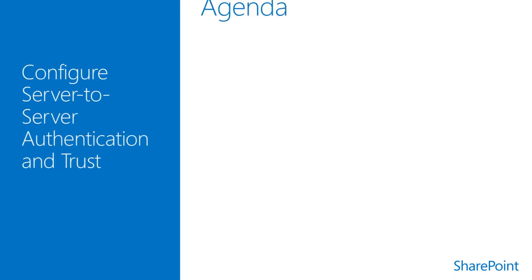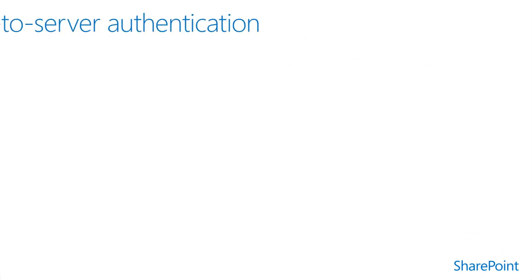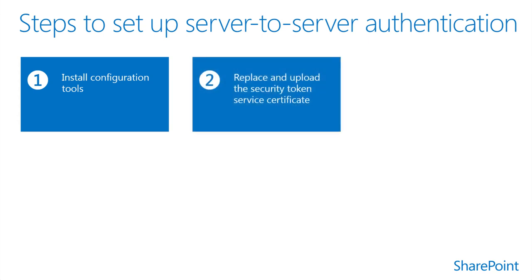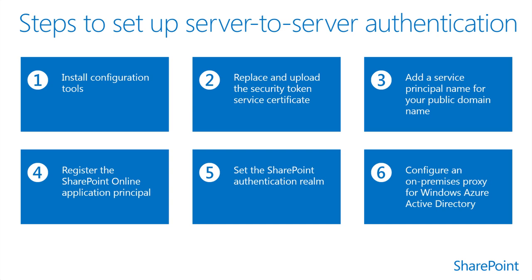This section provides an overview of configuring server-to-server authentication. When you set up server-to-server authentication for hybrid environments, you create a trust relationship between your on-premises SharePoint farm and your SharePoint Online tenant, which uses Azure Active Directory as a trusted token signing service. The process includes installing online service management tools on a web server in your SharePoint 2013 farm, configuring the security token service in SharePoint 2013 by creating and replacing the default STS certificate on each server in your farm, and lastly, configuring server-to-server authentication.